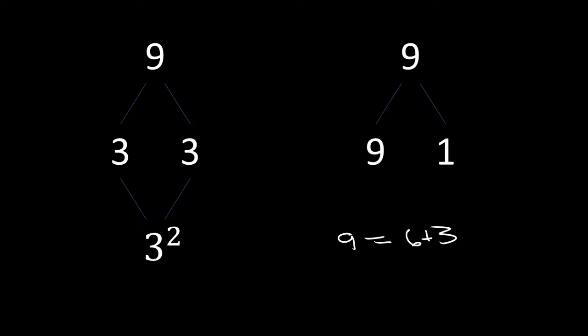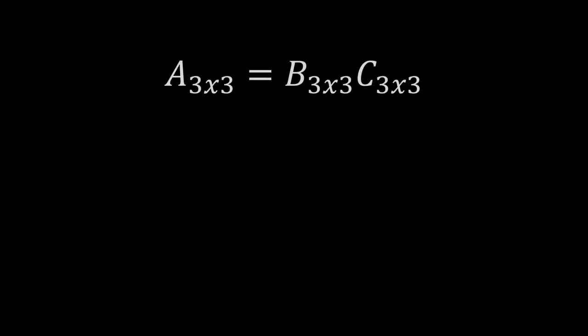But matrices are just collections of numbers and or variables. And so we can still do the same type of decompositions but with matrices. Say that we have an A matrix that is 3 by 3. We could break that into a B and C matrix that are both 3 by 3. And if you recall our matrix multiplication trick, these two values need to be equivalent, and these values give us the dimensions of our matrix, which will give us a 3 by 3 matrix.